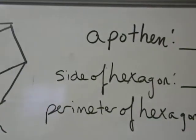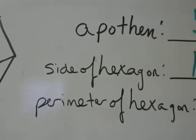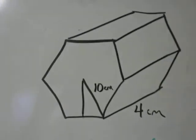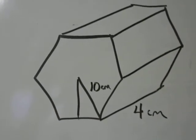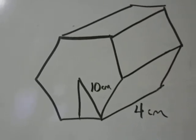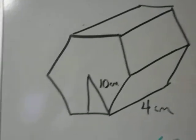You need to know the apothem, how long one side of the hexagon is so that you can find the entire perimeter of the hexagon. So when I look at this I need to ask myself, what kind of triangle lives inside of a regular hexagon? And we learned that it's the 30-60-90 special right triangle.